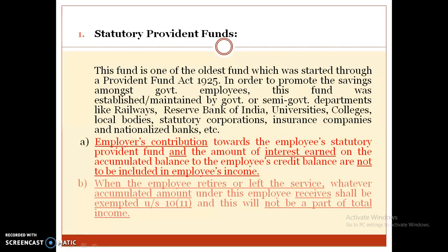Statutory Provident Fund is one of the oldest funds, started through the Provident Fund Act 1925. In order to promote savings among government employees, this fund was established by government or semi-government departments like railways, Reserve Bank of India, Universities, Colleges, Local Bodies, Statutory Corporations, Insurance Companies, and Nationalized Banks.